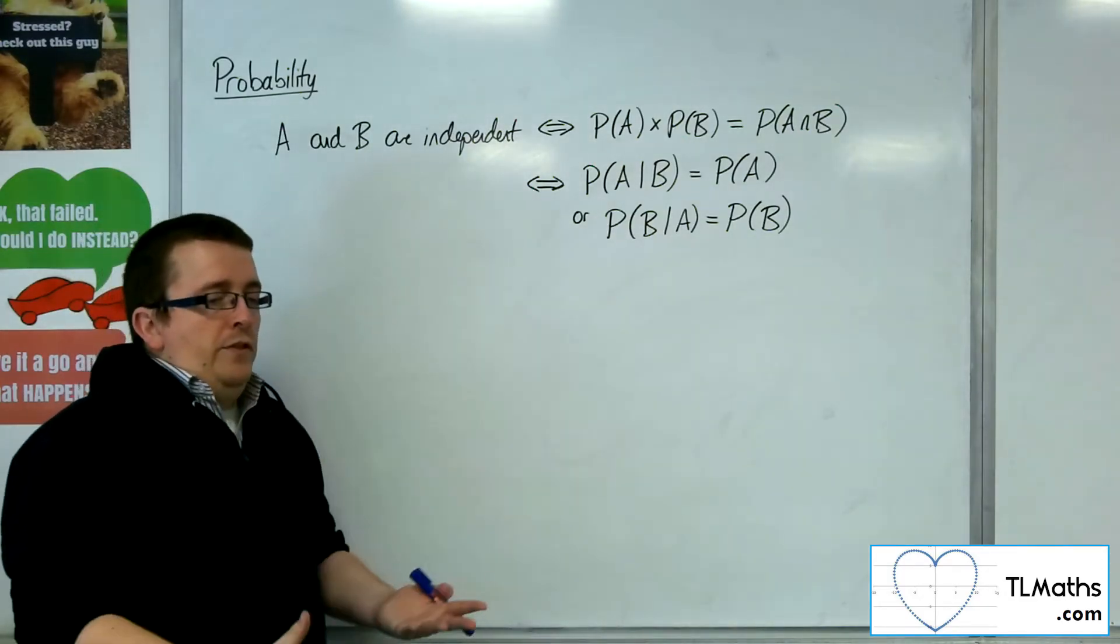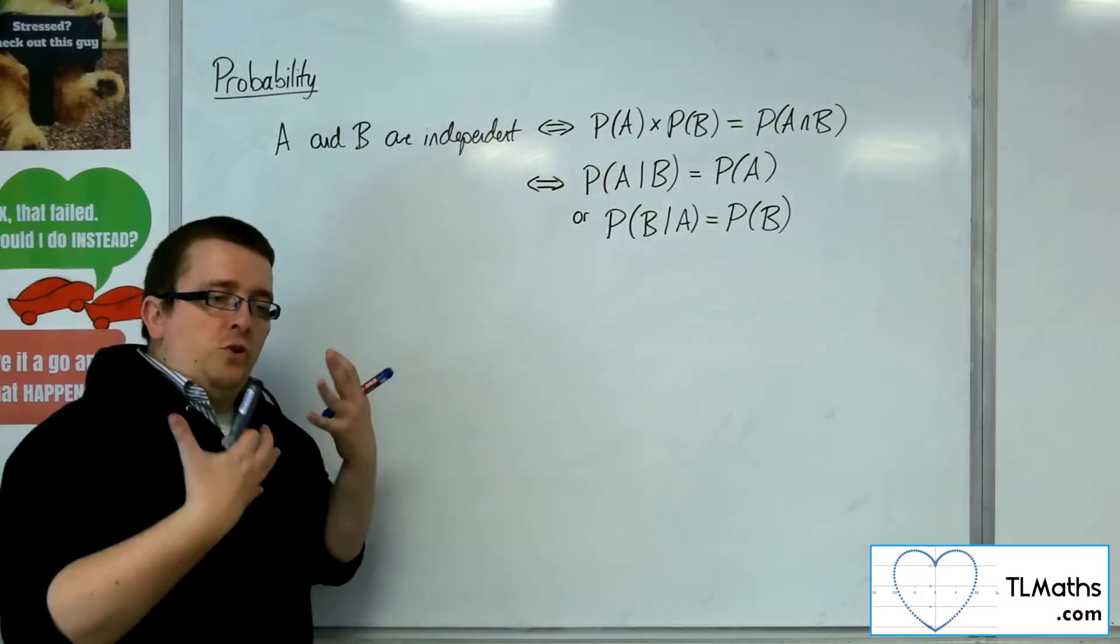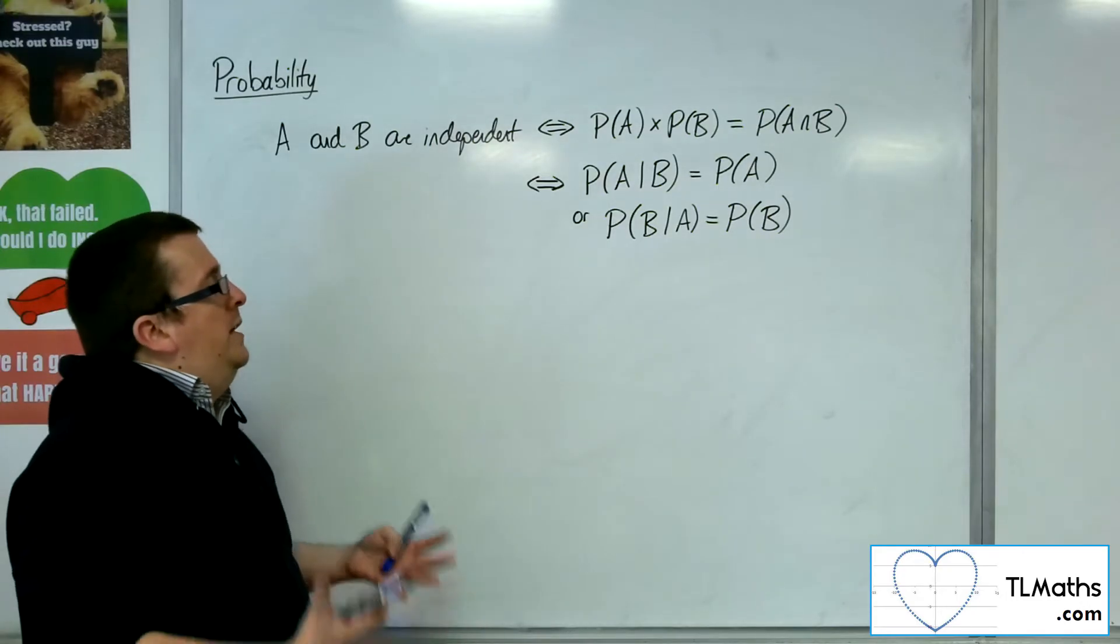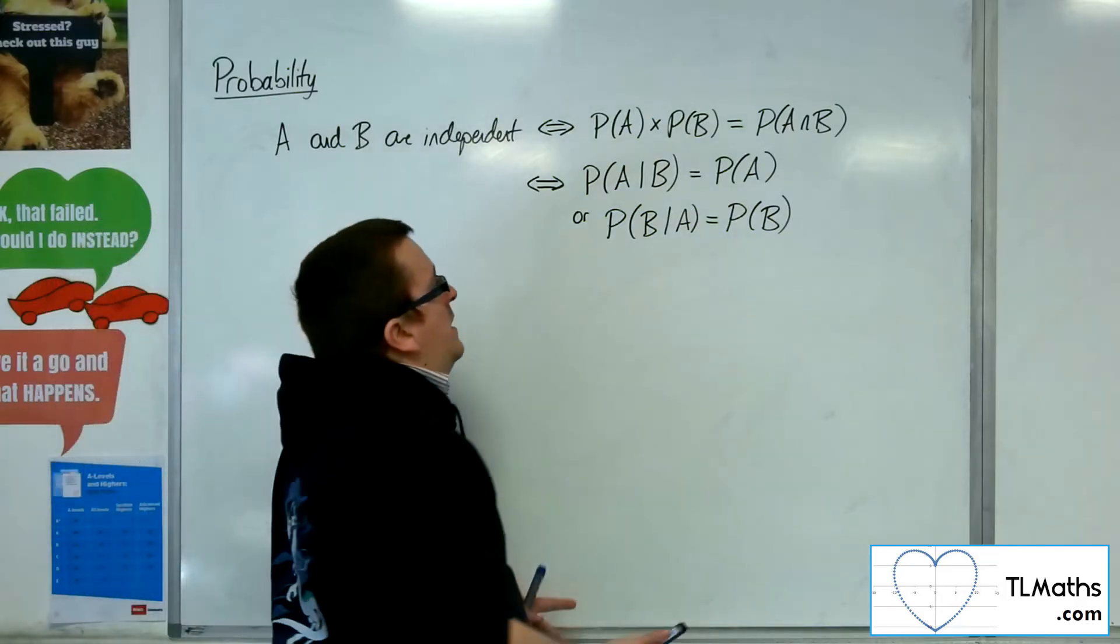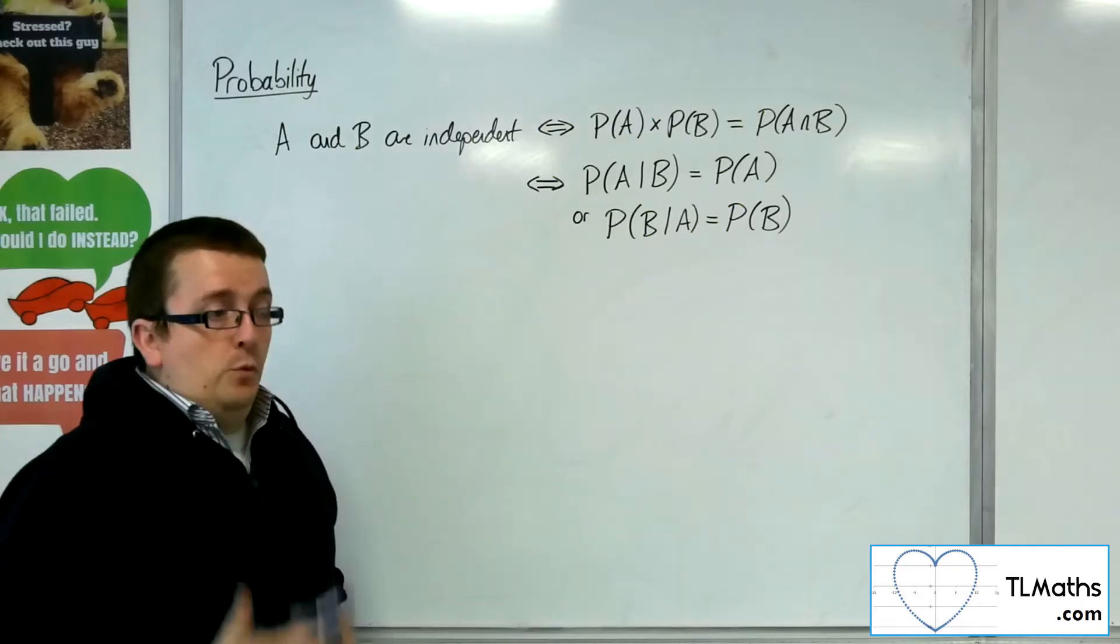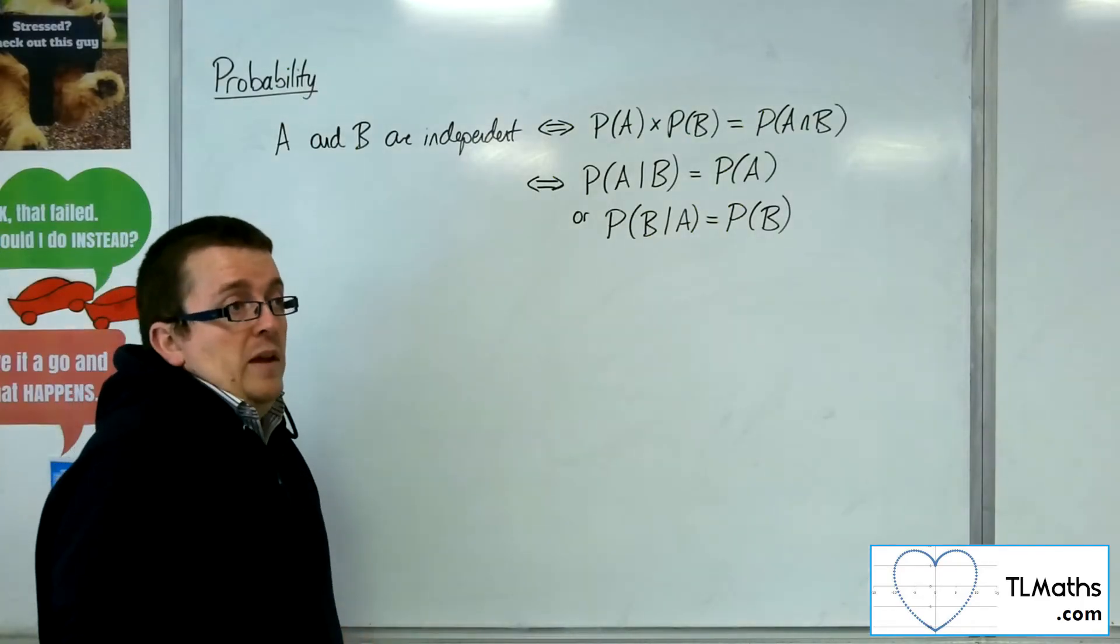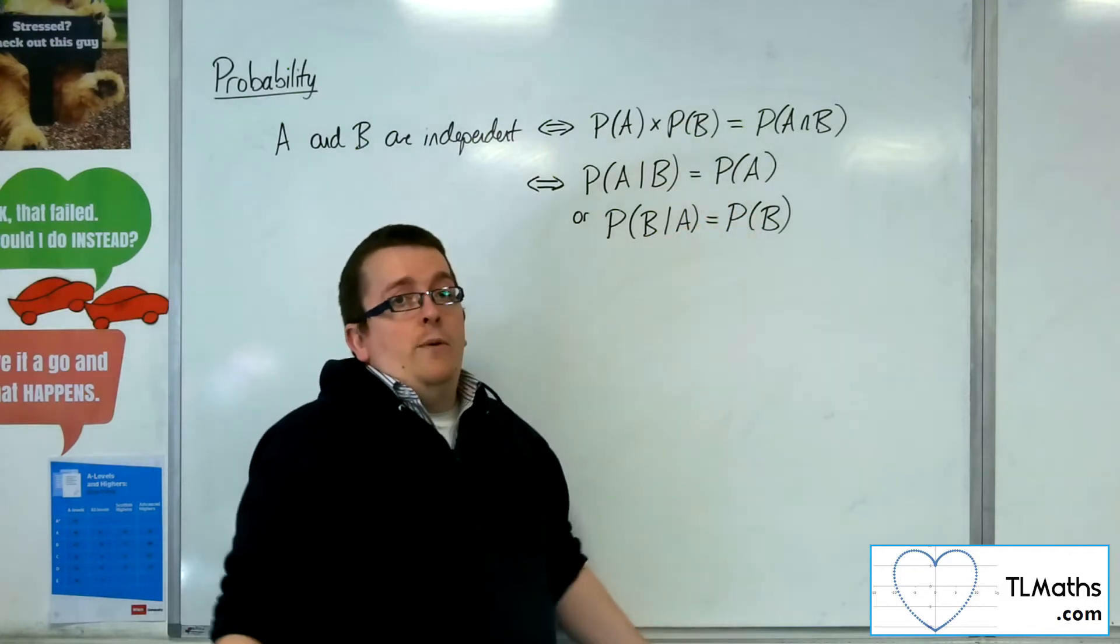If you think about this for a moment, it's quite straightforward as to why that would be the case. Because what we're saying there is that the probability of A, given that B's happened, given that we know that B's happened, the probability of A is the same as if we didn't know it happened.